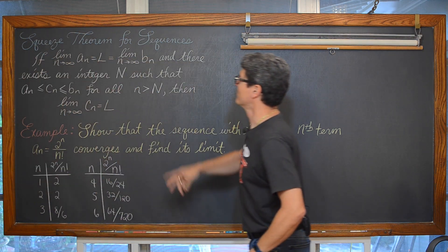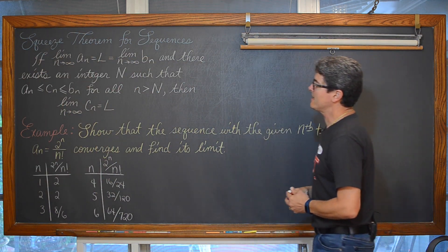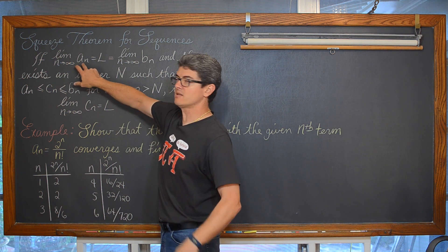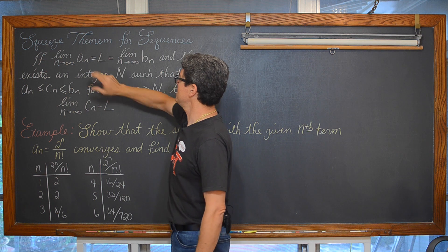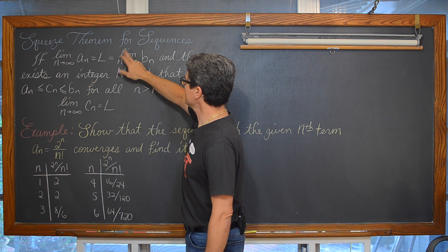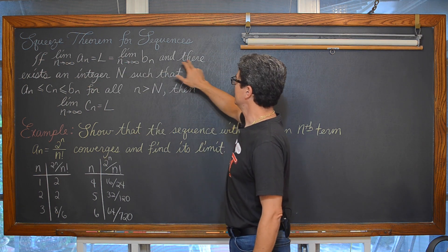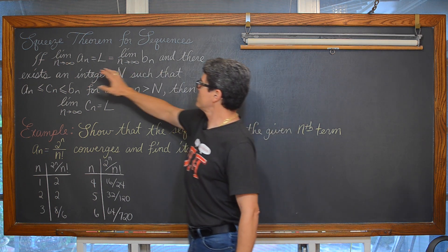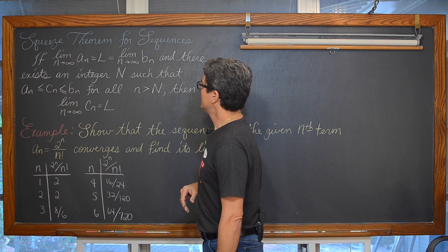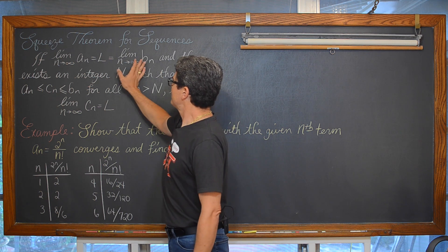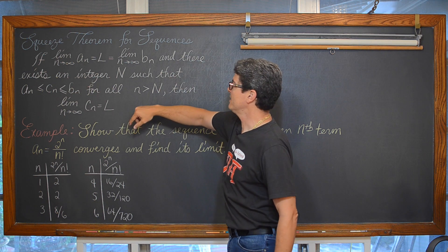Squeeze theorem for sequences. If the limit as n approaches infinity of a sub n and the limit as n approaches infinity of b sub n — these coming from two different sequences, two different nth terms — if those are both equal to L and there exists the same real limit,